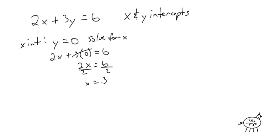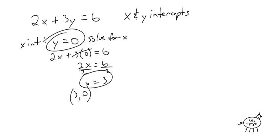Now, math fans, I'm looking for a coordinate. x equals 3, but we already set y equal to 0, so the coordinate is 3, 0. That is the answer — that is my x-intercept.